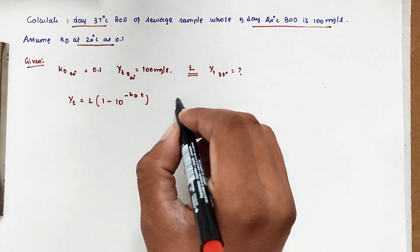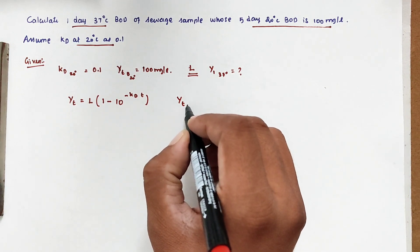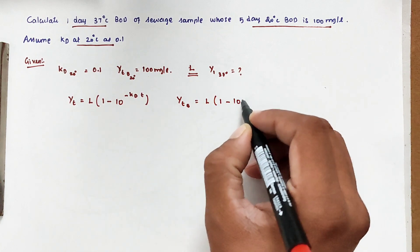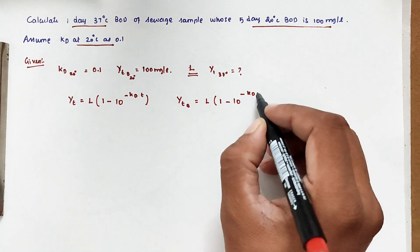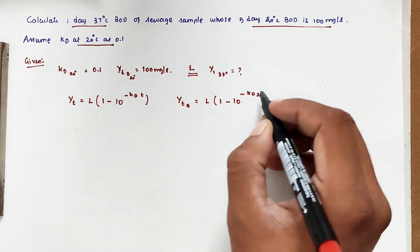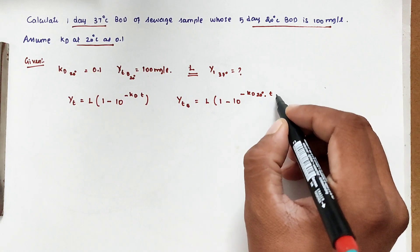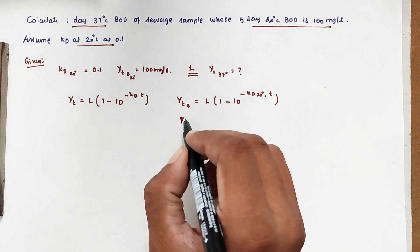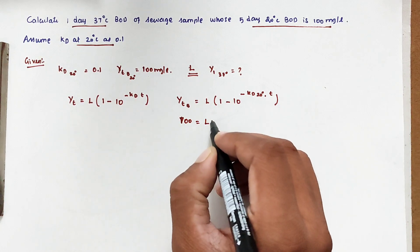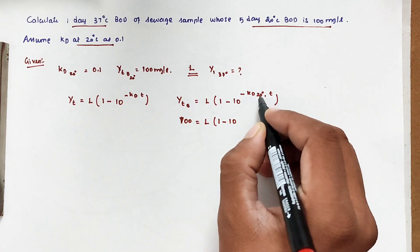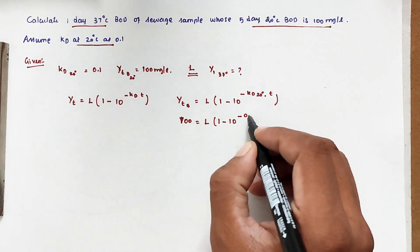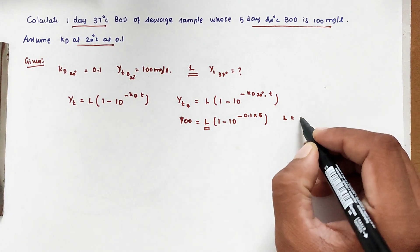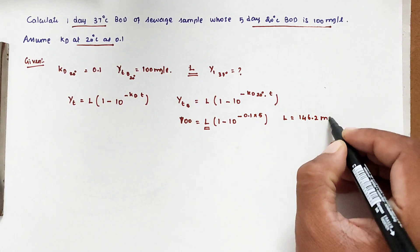Substituting the 5-day values: 100 = L × (1 - 10^(-0.1 × 5)). The only unknown is L. Solving this, we get L equal to 146.2 milligrams per liter.